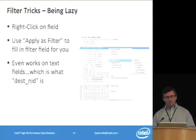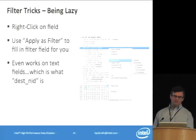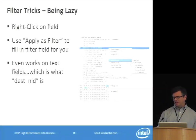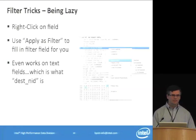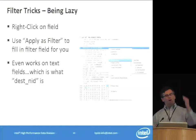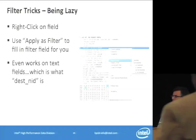To minimize typing, you can right-click on a field and use the Apply as Filter option to automatically populate the filter field. For example, clicking on a destination NID field and choosing that as a filter will show all packets whose destination NID matches. In Lustre, this is useful for filtering all operations on a given FID — find a FID in one packet, right-click, and apply it as a filter to see only packets acting on that FID. This is where the power of filtering really comes into play.